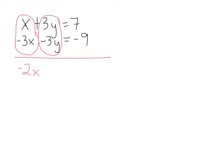So the reason they call this elimination is because I just eliminated the y's. And so I'll have equals 7 plus negative 9 is negative 2. Now look what's nice about this. Because now all I have to do is divide by negative 2 on both sides and I know that x equals 1.